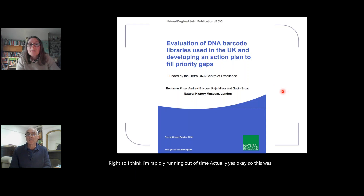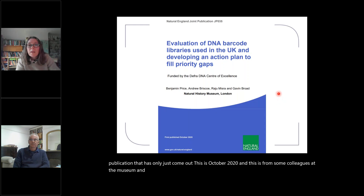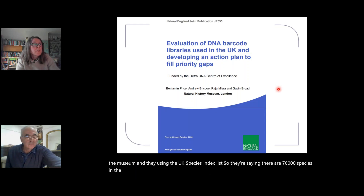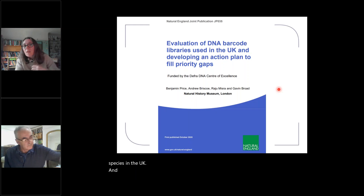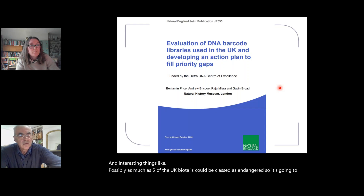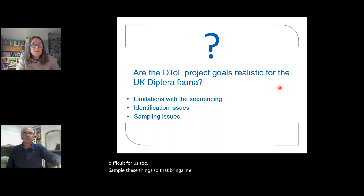This was a very useful publication that has only just come out — October 2020 — from some colleagues at the museum. They're using the UK species index list, saying there are 76,000 species in the UK, and interesting things like possibly as much as 5% of the UK biota could be classed as endangered. So it's going to be difficult for us to sample these things. That brings me on to the challenges that are specific to the UK Diptera.